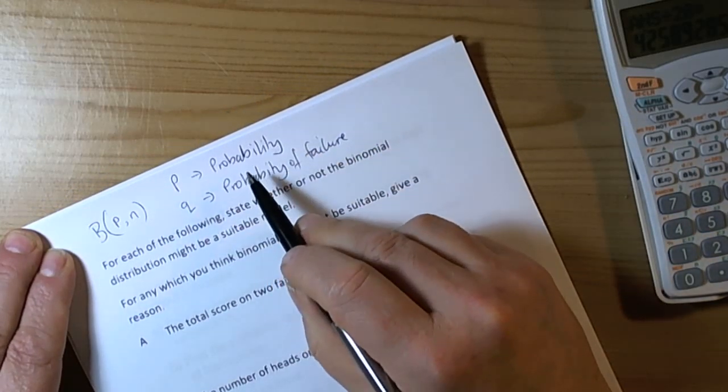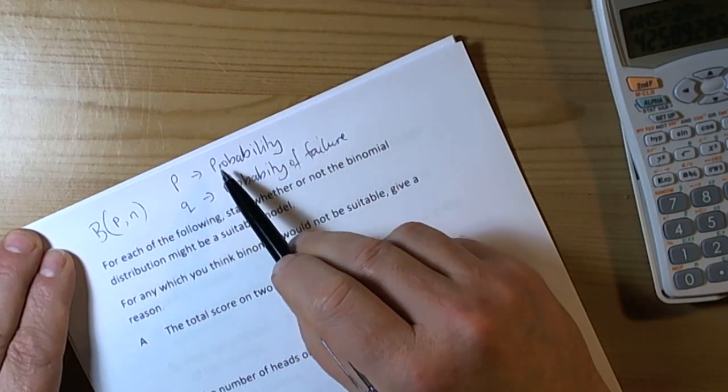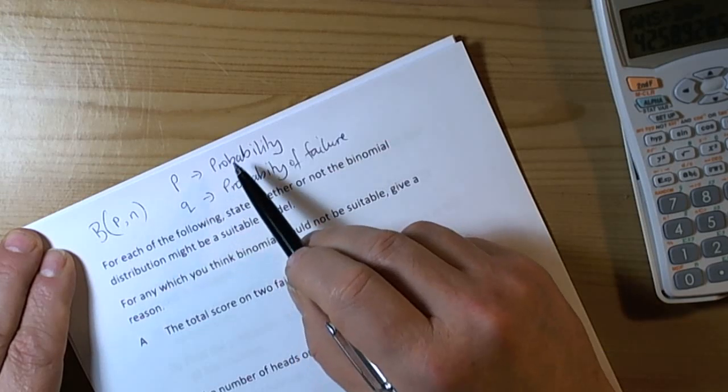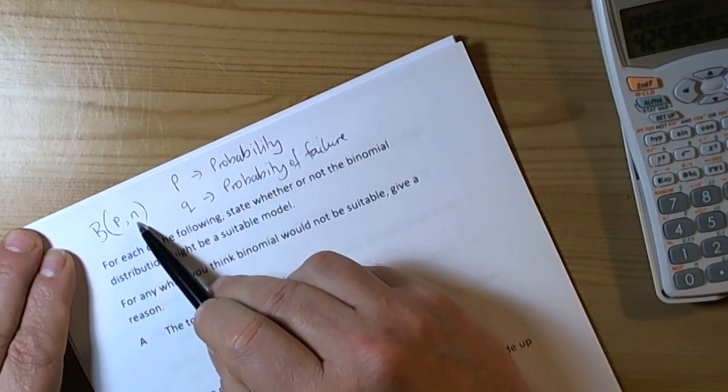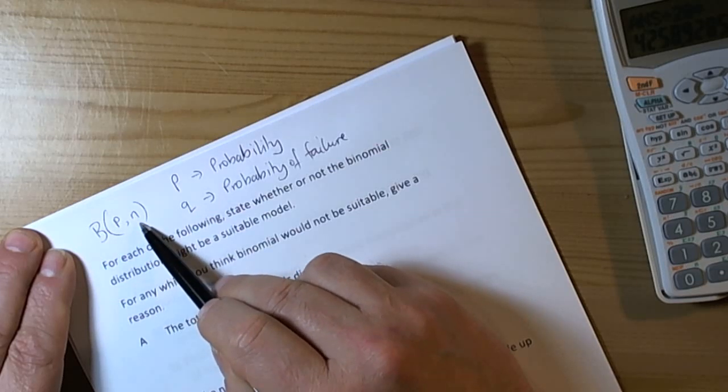To have a binomial distribution, the number of outcomes is 2: either a success or a fail. There must be a fixed number of trials. You can't just do this where the trials keep going on and on. There must be a fixed number of trials.